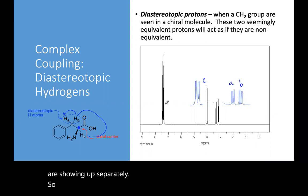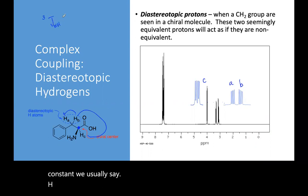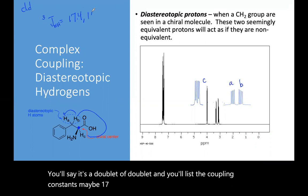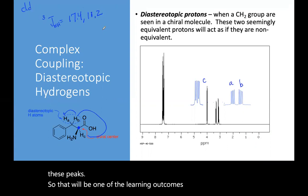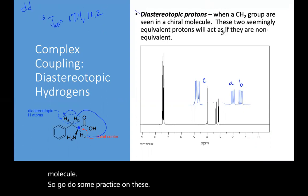Walk through some of these different examples and take a look at the way we want these reported. Because usually we report that J constant. We usually say it's HH, it's a doublet of doublet, and you'll list the coupling constants, maybe 17.4 and 10.2. So you need to have both the coupling constant and the multiplicity in there when you report these peaks. That will be one of the learning outcomes: reporting those correctly, and then using that to figure out the structure of the molecule. So go do some practice on these, and look at when they show up.